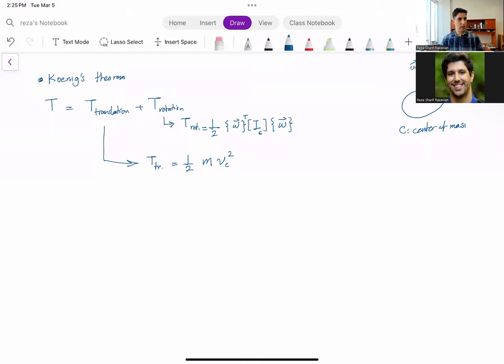So this is the kinetic energy of a rigid body: the addition of the translational kinetic energy of the center of mass plus the rotational kinetic energy.